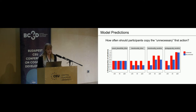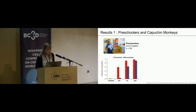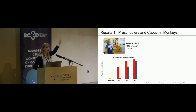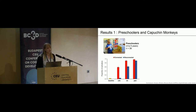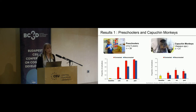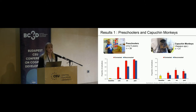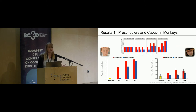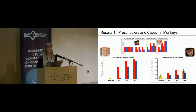Now the actual data. The preschoolers look a lot like the pedagogically-sensitive model: in the unknowing condition they can differentiate between the connected and disconnected box, but when they see a pedagogical demonstration they almost always copy the first action. The capuchin monkeys, however, do not—they are also sensitive to the causal manipulation but show no difference depending on the intentionality condition. When we fit the model predictions to the data, children are best explained by the pedagogically-sensitive learner and the capuchin monkeys by the intentionality-blind learner.